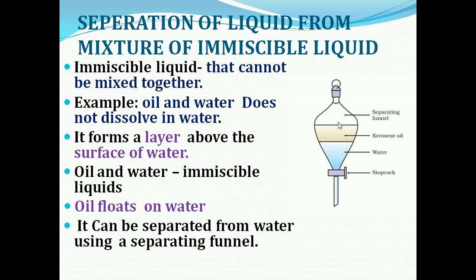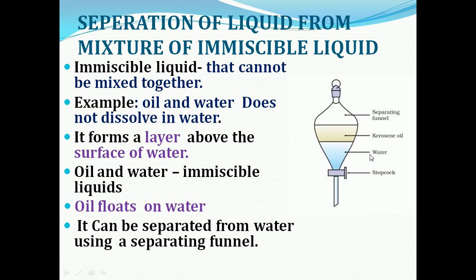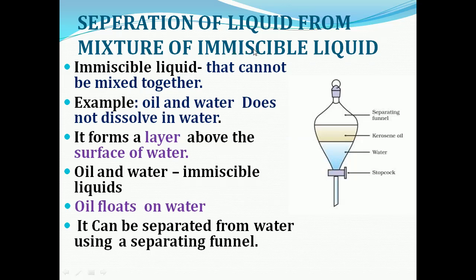This is the separating funnel used in the laboratory. We take kerosene oil plus water in it. When kerosene is mixed with water, the oil will float on the water. It has to be kept undisturbed for some time. Then the water is collected by opening the stopcock, and then kerosene is collected separately. This method is used for separating a liquid from a mixture of immiscible liquids using a separating funnel.